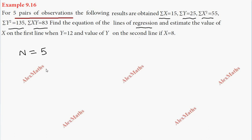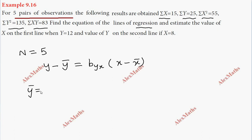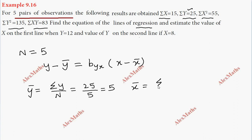First, the regression line y on x: y minus y-bar equals b_yx into x minus x-bar. We compute y-bar equals sigma Y divided by n, which is 25 divided by 5, giving y-bar equals 5. And x-bar equals sigma X divided by n, which is 15 divided by 5, giving x-bar equals 3.